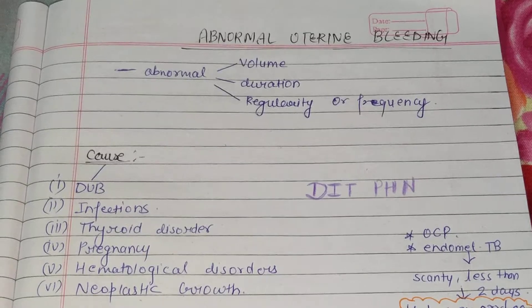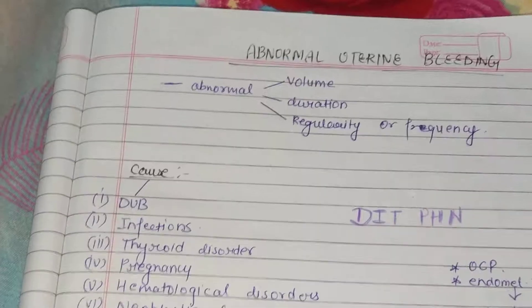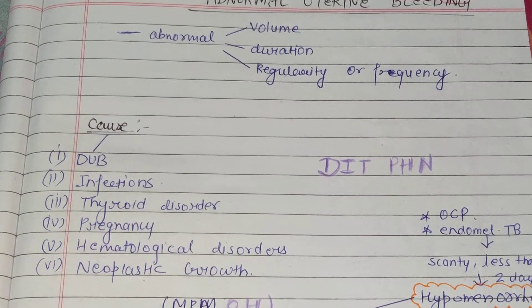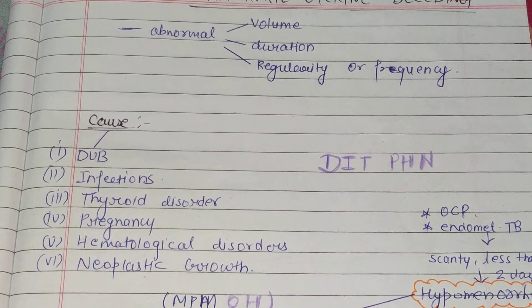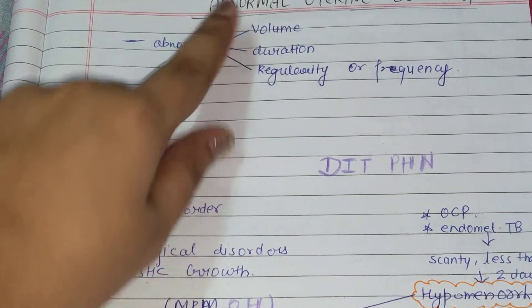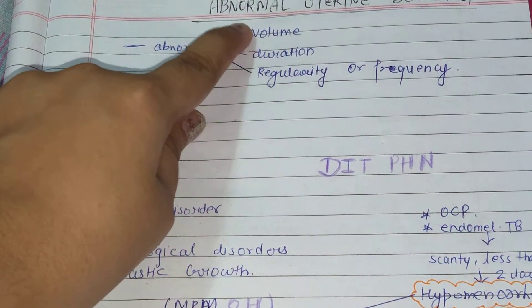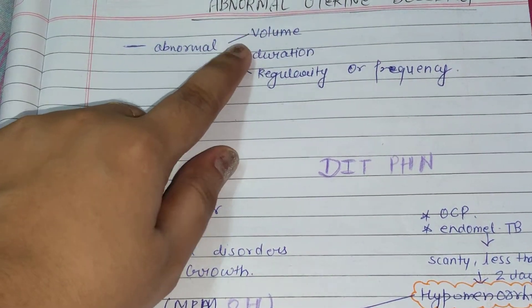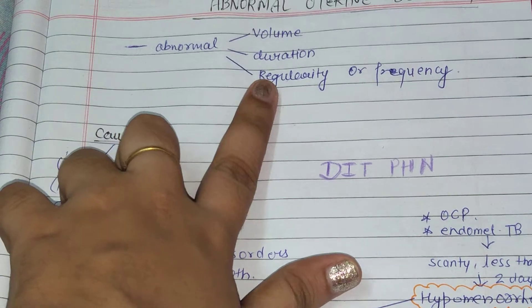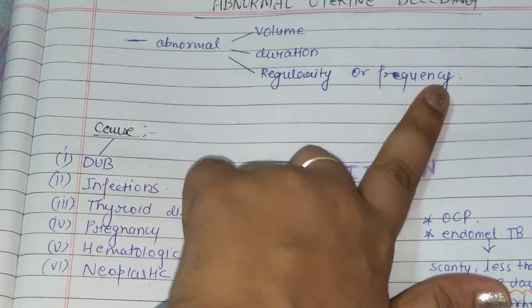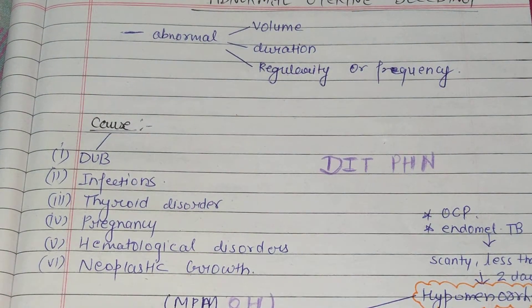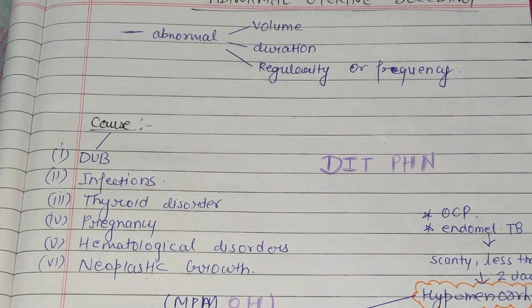First of all, let's talk about the definition of Abnormal Uterine Bleeding — bleeding which is abnormal in volume, in duration, in regularity, and in frequency. We call it Abnormal Uterine Bleeding.